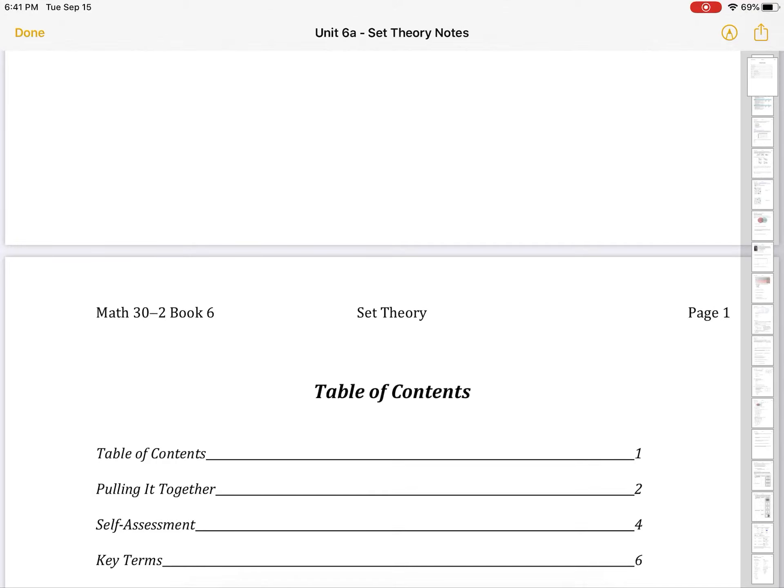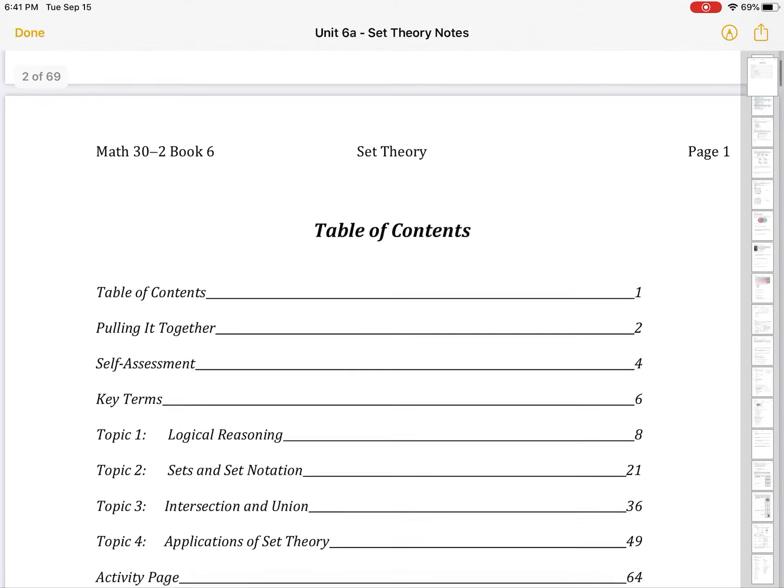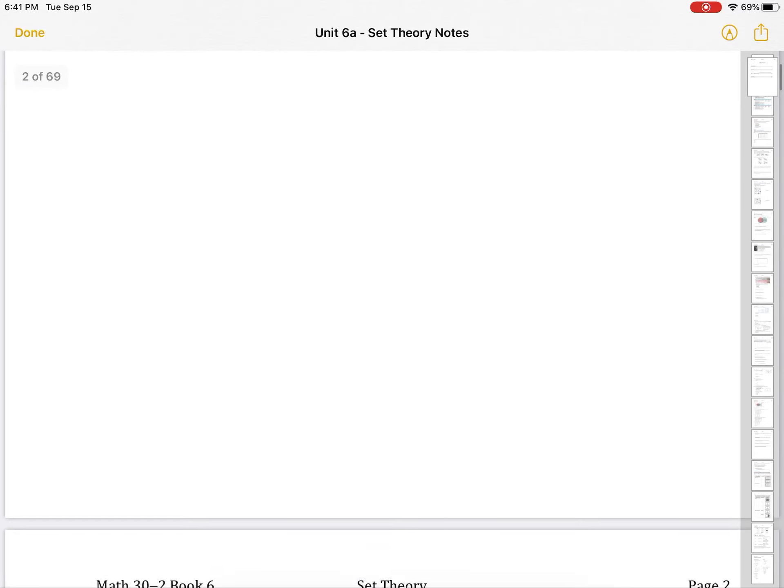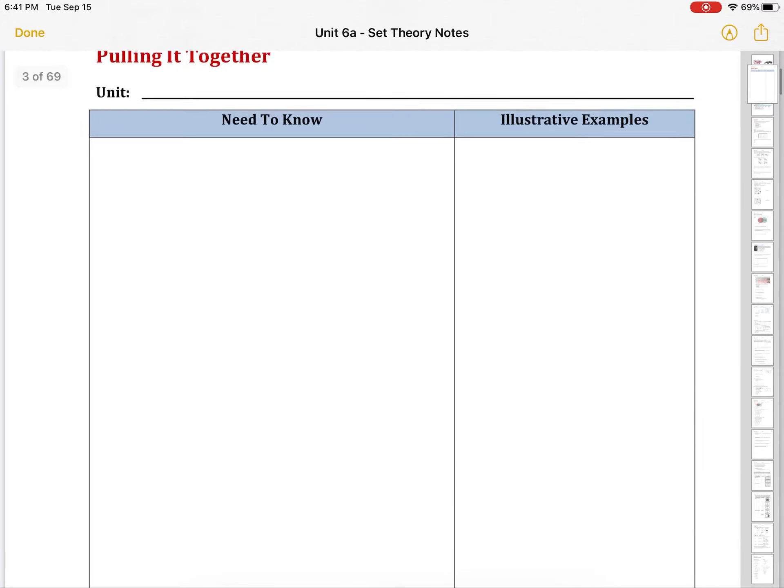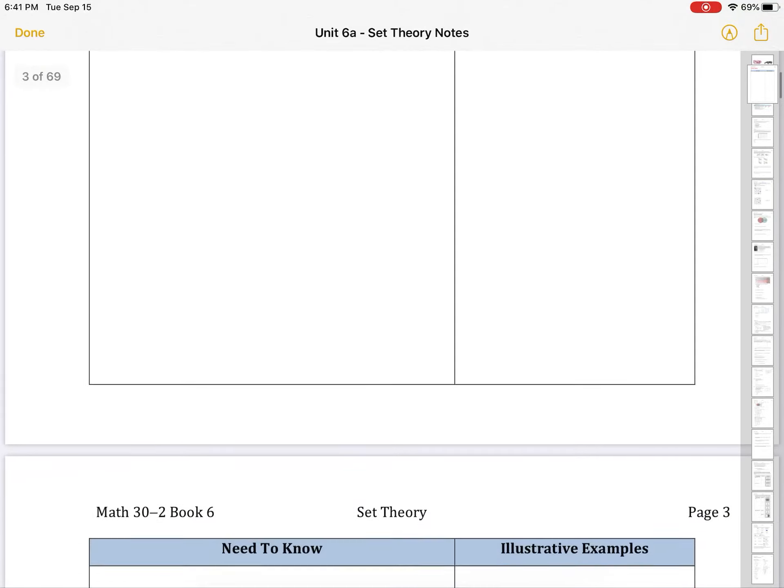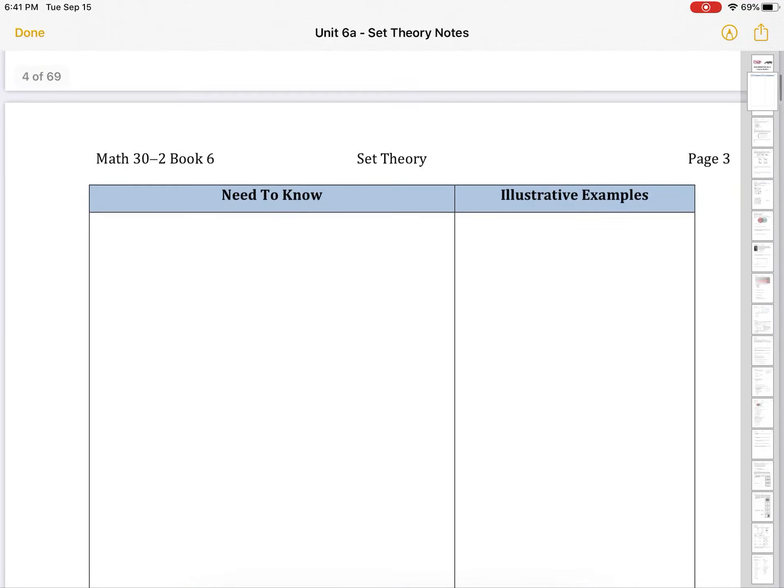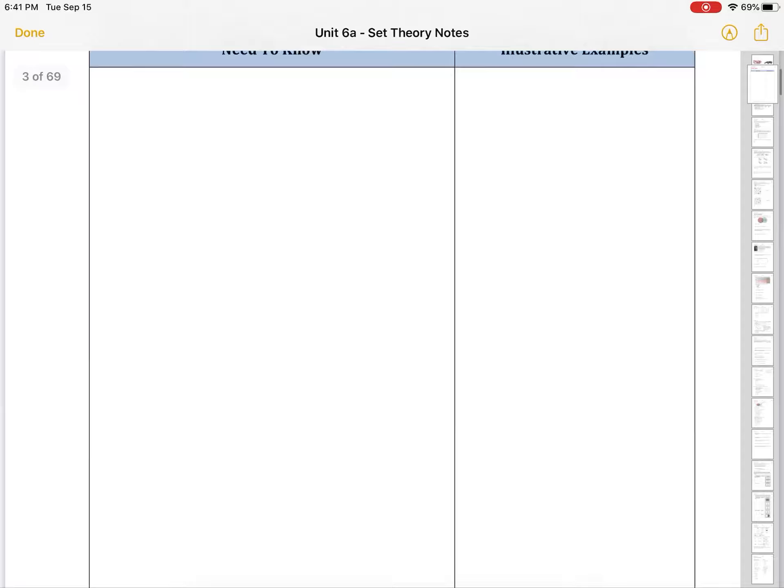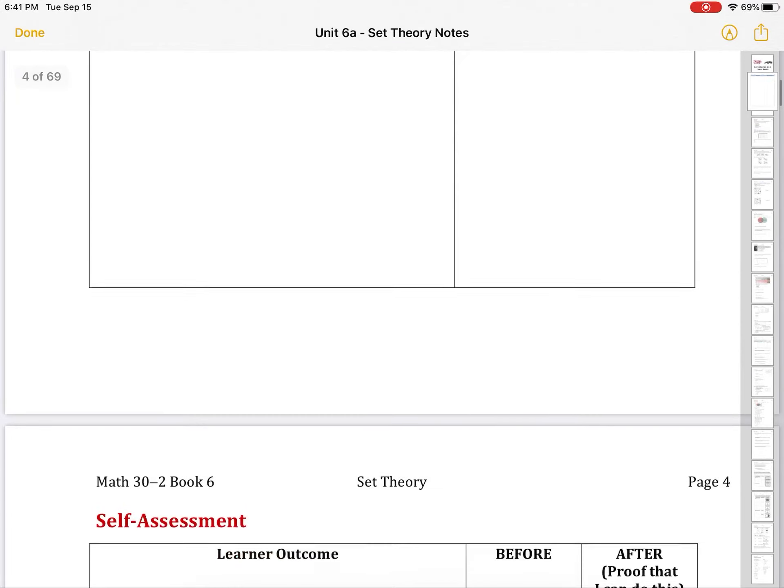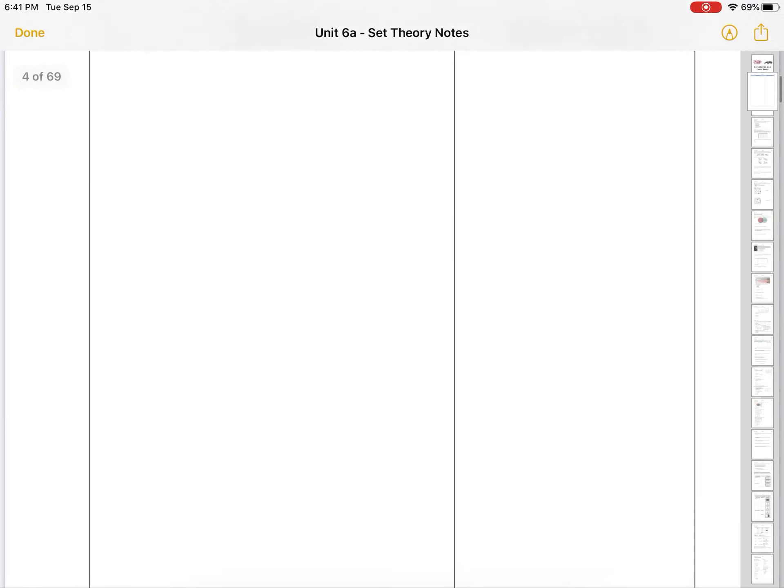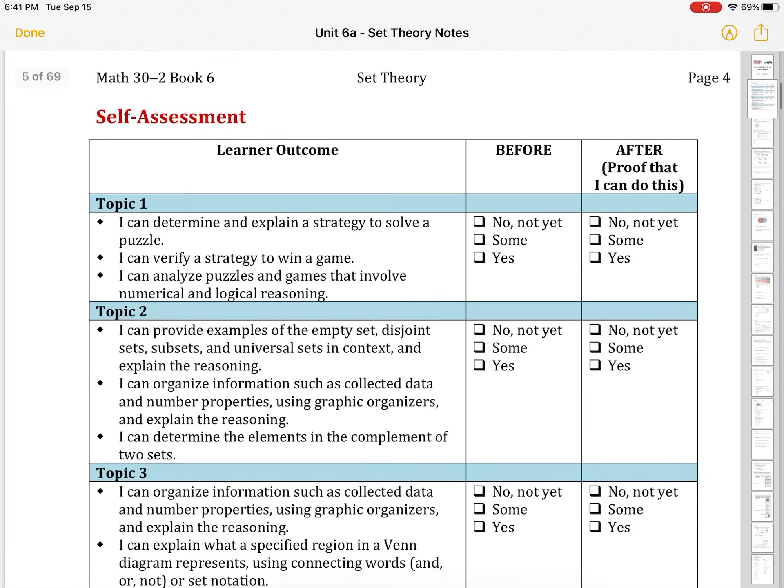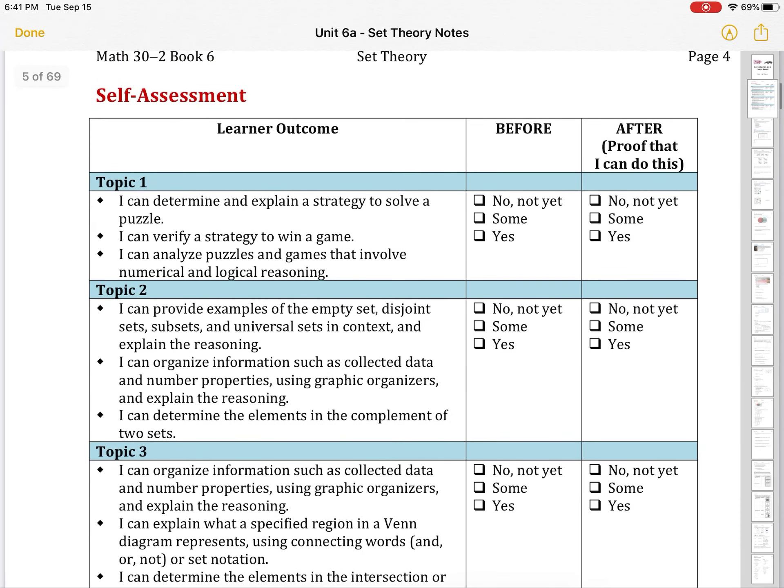You may notice that on the unit test, there was a logical reasoning question because those will show up on the diploma. So it's to give you some practice and give you some skills for how to approach them. As always, in the note package, there's some need-to-knows, things you need to know. Fill in an example. Use this as a study guide. And then you can do some self-assessment. We're doing topic one today.